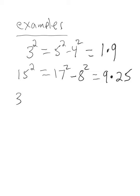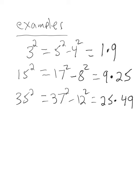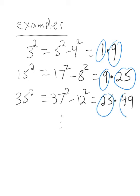Let's look at one more: 35² = 37² - 12². Breaking this down using the difference of squares: 37 - 12 is 25, and 37 + 12 is 49. What you want to notice is that all of these numbers I'm circling right now are all perfect squares.